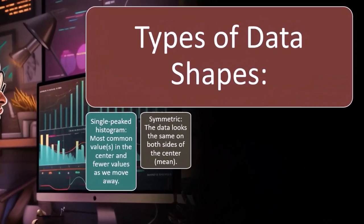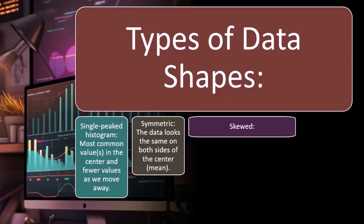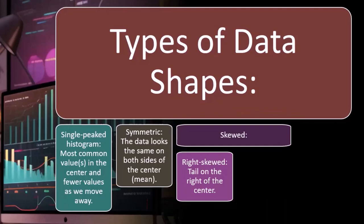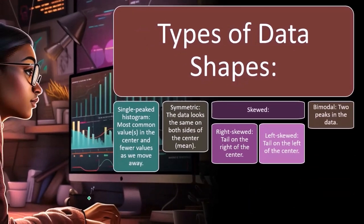Symmetric: the data looks the same on both sides of the center. If it's symmetric, again you're probably envisioning like a bell-shaped curve at the middle point, and then you have the data somewhat symmetrically on either side of that middle point. But when it is skewed, that's the term we used: right skewed means a tail on the right of the center, meaning you've got more data going to the right side with that tail going out towards the right. Then left skewed: tail on the left of the center, the opposite.